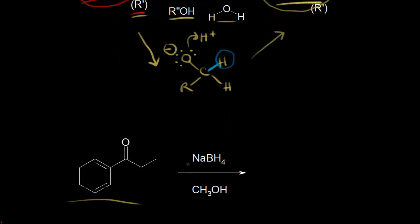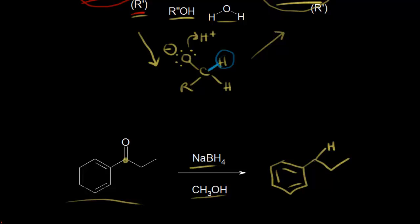Let's look at an example using sodium borohydride. Over here we have a ketone, and we have sodium borohydride in methanol. For our final product, our ring is untouched, and we're adding a hydride — a hydrogen and two electrons — to our carbonyl carbon. We're going to form an alkoxide, and then protonate the alkoxide in the workup to form an alcohol. So here we're starting with a ketone and ending with a secondary alcohol, where the carbon bonded to the OH is bonded to two other carbons.